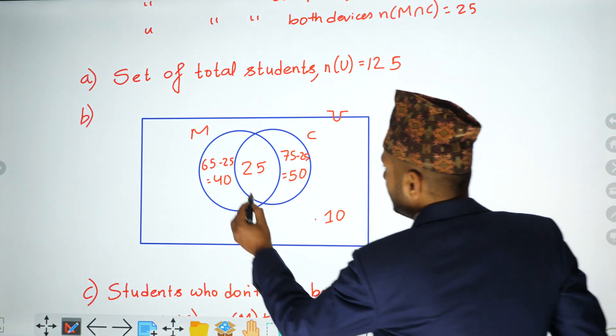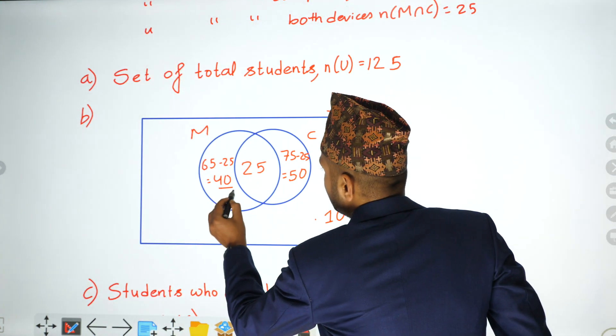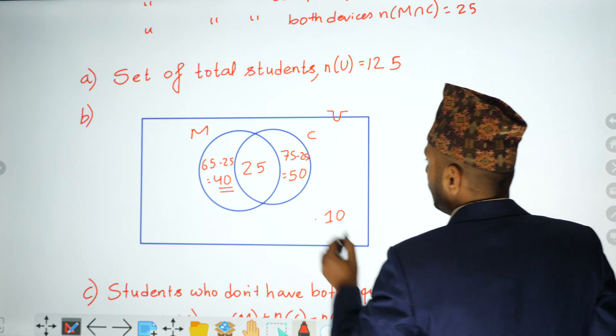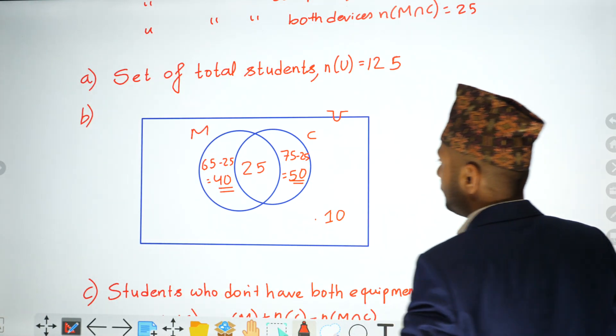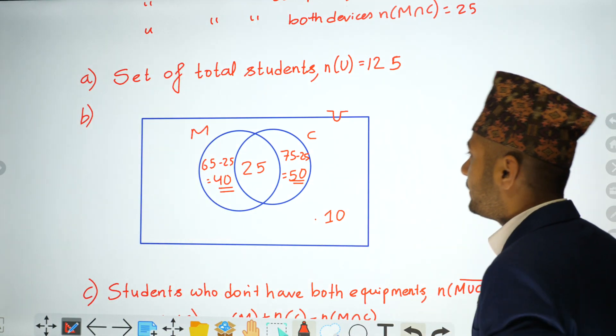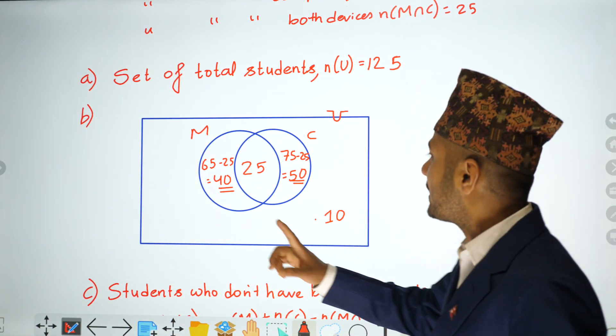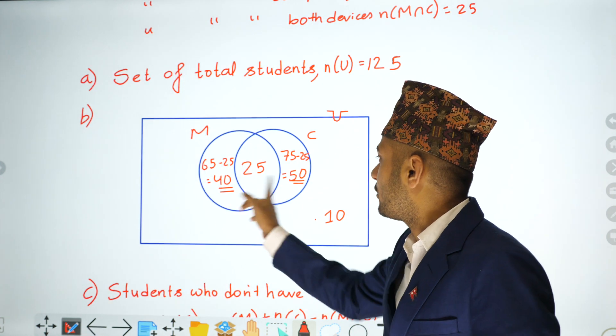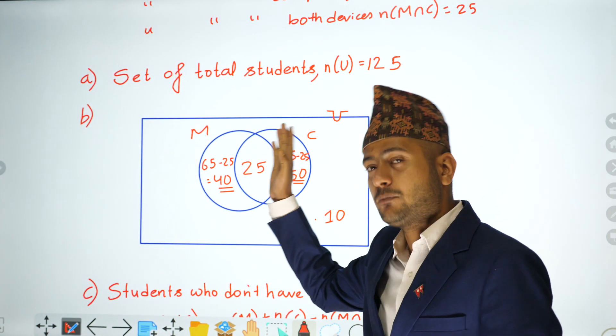Students with only mobile: 40. Students with only computer: 50. Therefore, students with only one equipment: 40 plus 50 equals 90.